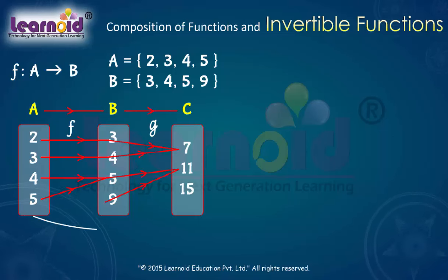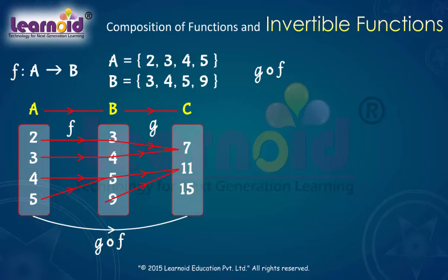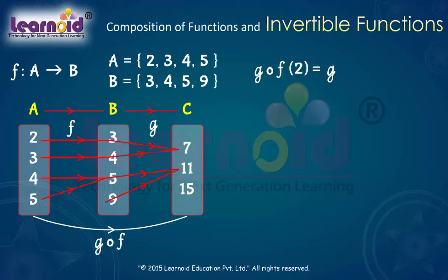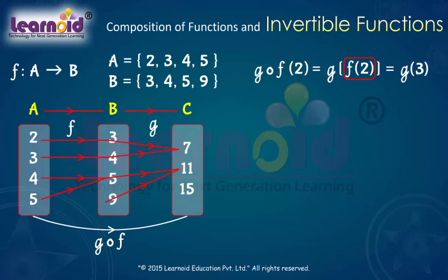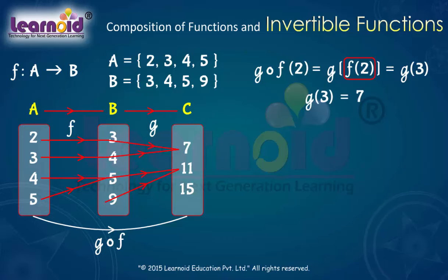Now let us find gof. gof(2) = g(f(2)). Since f(2) = 3 and g(3) = 7, so gof(2) = 7.